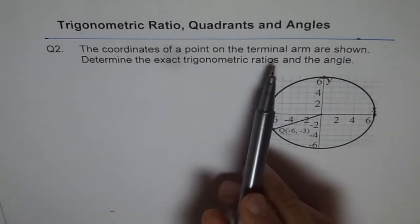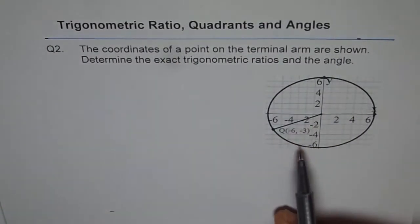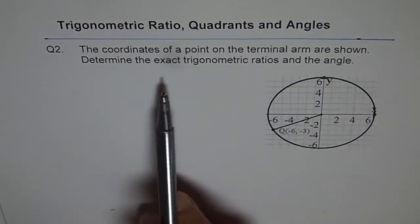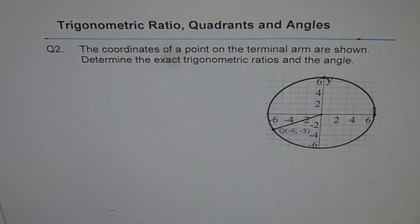Question 2: The coordinates of a point on the terminal arm are shown. Determine the exact trigonometric ratios and the angle. Angle has not been specified to which accuracy so you can use one decimal place for the time being. Normally it will be specified.